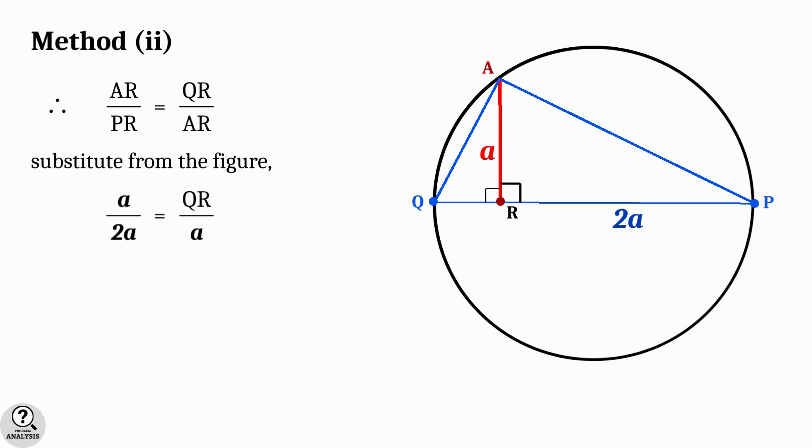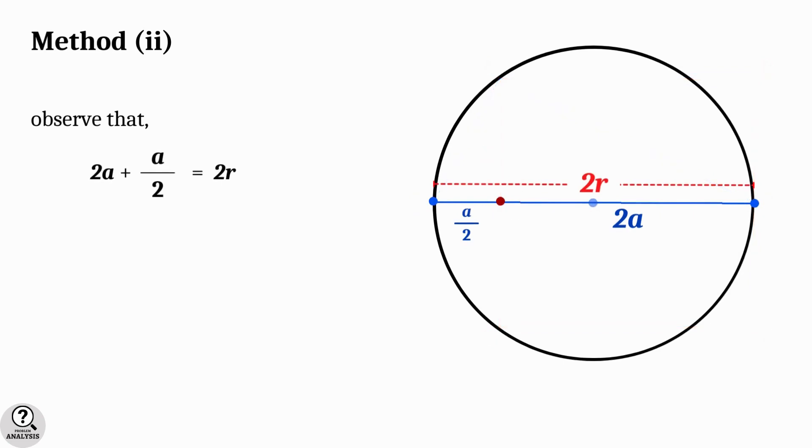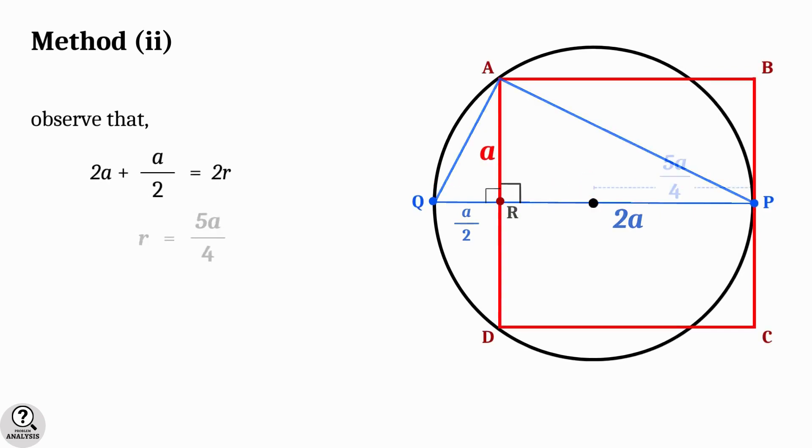Substituting from the figure, we get a by 2a is equal to QR by a, which implies QR equal to a by 2. Now the remaining parts are similar to method one. That is, observe that 2a plus a by 2 equal to 2 times radius. That is, radius R equal to 5 by 4 times a.